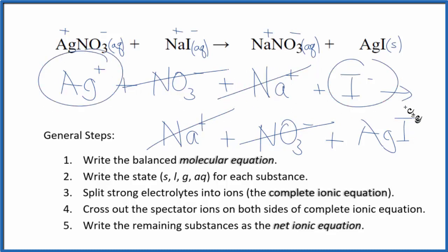What's left is the net ionic equation for AgNO3 plus NaI. I'll clean this up and write the states in, and we'll have our net ionic equation.